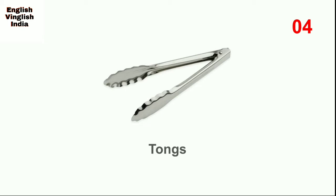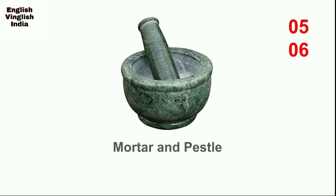Next, tongs. As you can see, this is a tool with two arms that are pushed together to pick something up — for example, for turning chapati, for serving noodles, momo, etc.